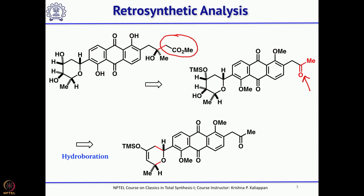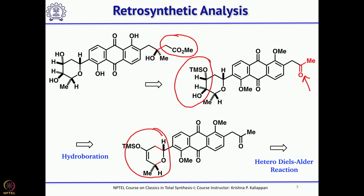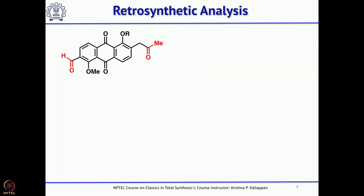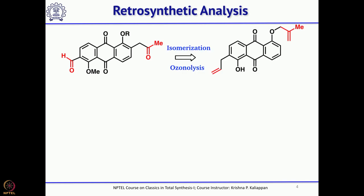If you look carefully at this methyl ketone, on the left-hand side you have this dihydropyrone. This was converted into the dihydroxyl group using hydroboration oxidation — already there is an enol TMS, and one more hydroxyl group was introduced using hydroboration oxidation. As mentioned, this dihydropyrone unit was made through a hetero Diels-Alder reaction.